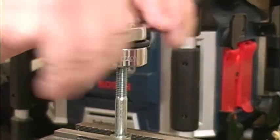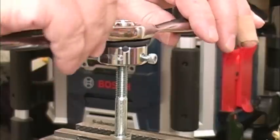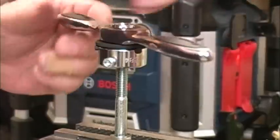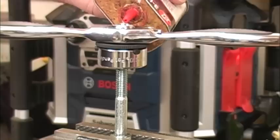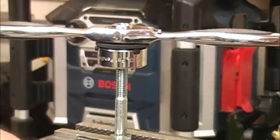The die will start to show some resistance when it encounters the damaged threads. At that point, we want to start turning the die forward about a half to three quarters of a turn, then back it up about a half a turn to break the chips, and keep repeating that cycle. Even though this is light cutting, I still add a little bit of oil just to make sure everything goes smoothly.